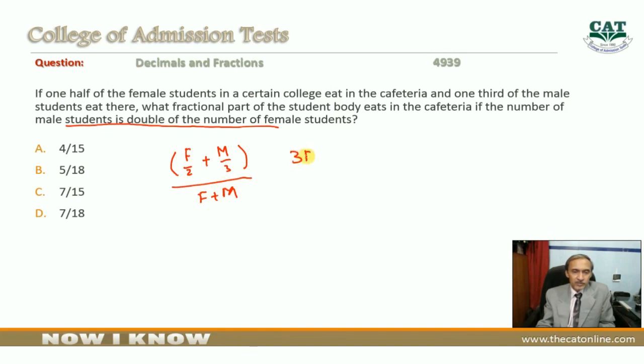Taking the LCM, this becomes (3F plus 2M) over 6, divided by (F plus M). So this will be (3F plus 2M) over 6, multiplied by 1 over (F plus M).